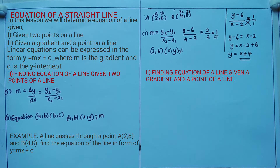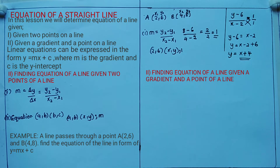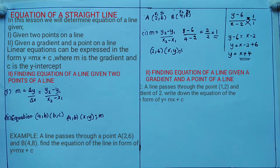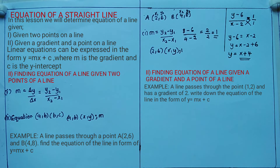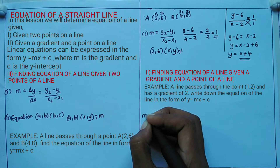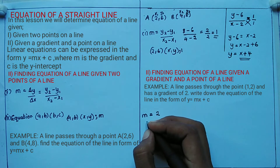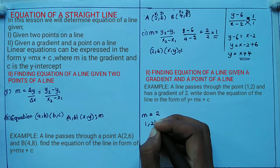In the second scenario, you are given the gradient M and one point, and told to find the equation. For example: a line passes through the point (1, 2) and has a gradient of 2. Write down the equation in the form y = mx + c. In this case, M = 2 and the point is (1, 2).